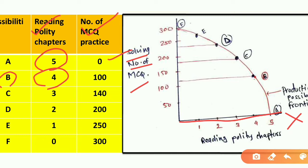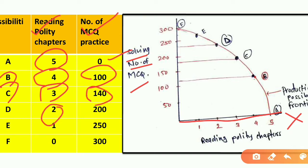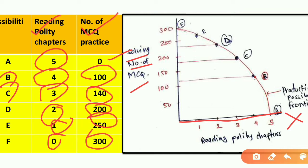One possibility is to read four chapters and use the rest of the time to solve MCQs. The next possibility is if you read two chapters, you have more time left and can solve more MCQs. If you read one chapter, you can solve a maximum of 300 MCQs. So you can understand the trend: as chapter reading decreases, the quantity of MCQs you can solve increases.